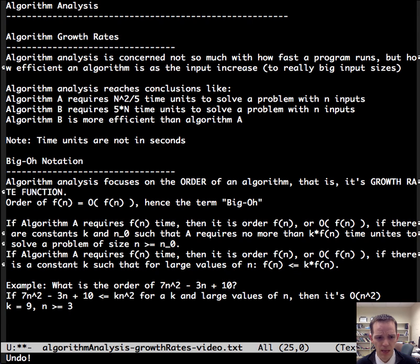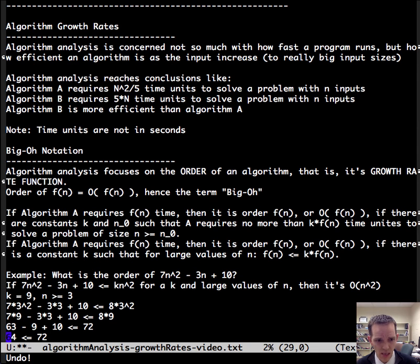And so let's see it. Let's play it out. Let's just pick K as 9 and looking only at N is greater than or equal to 3. Now, 3 is very small, but it serves the purpose here. So as we plug in the K and the K value here, we resolve the exponentiation, and then we take the product and then we do subtract and add. Then what we're left with is, indeed, 64 is less than or equal to 72.